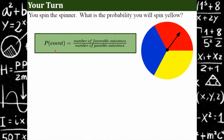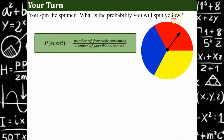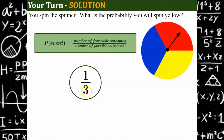Now we have a spinner. Use the same concept: find the favorable outcomes versus the possible outcomes, then come back. Welcome back. This is a fair spinner because each section is the same size, so it's equally likely to land on blue, red, or yellow. There are three different outcomes, so our denominator is three. The event we're looking for is spinning and landing on yellow, and only one section is yellow. So the probability of spinning yellow is one out of three.